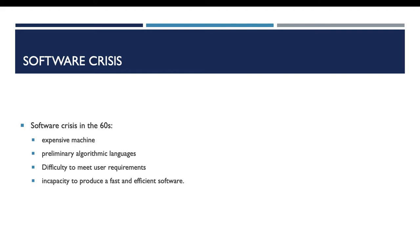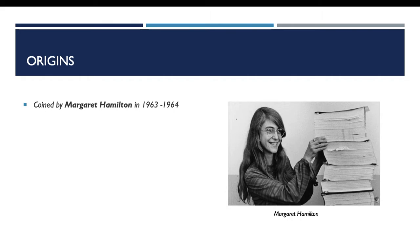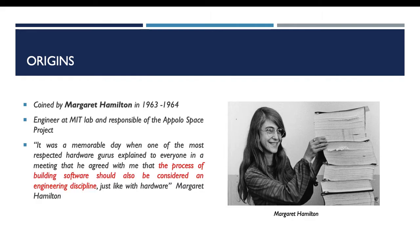In this situation, the problem faced by engineers was how to develop reliable and cost-effective software. So in 1963–1964, Margaret Hamilton, an engineer at the MIT lab and responsible for the Apollo space project, came up with the term software engineering and stated that the process of building software should also be considered as an engineering discipline.